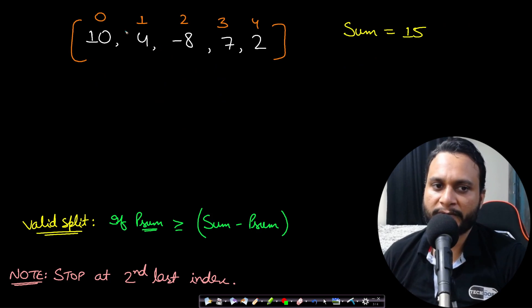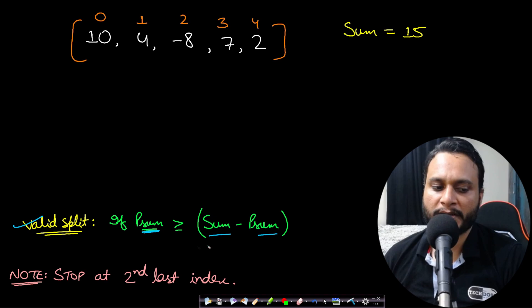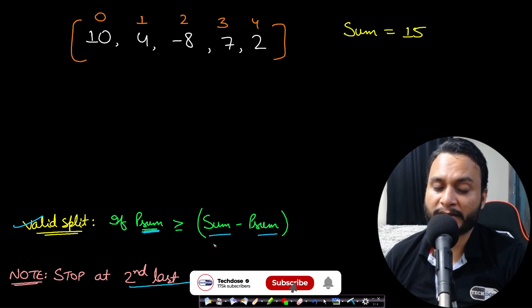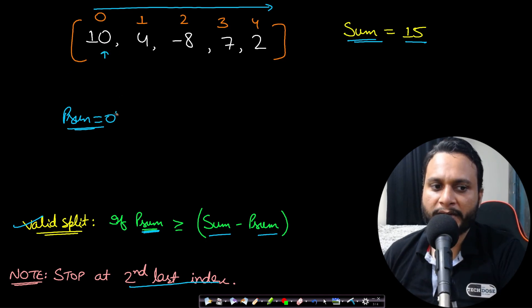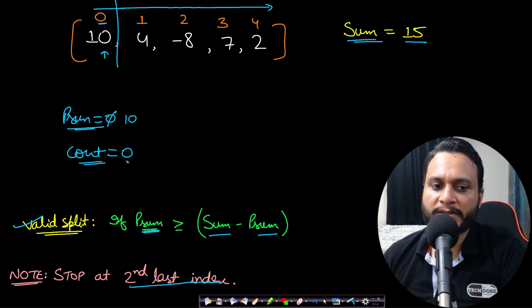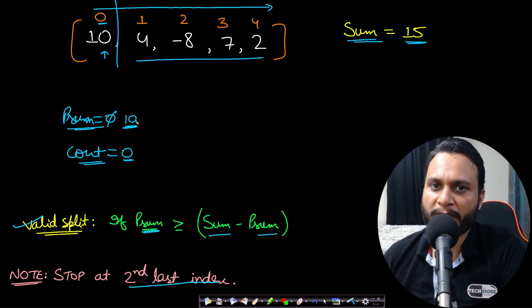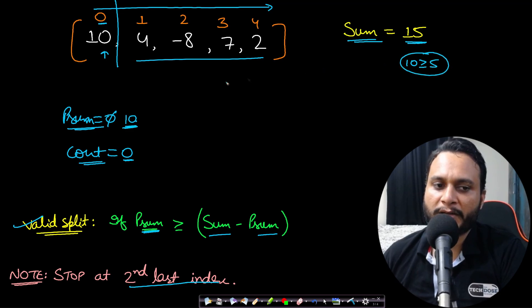Let's do a dry run with five elements. The condition for a valid split is: prefix sum >= total sum minus prefix sum. We stop at the second last index per the constraint. First, compute the total sum by traversing left to right — this equals 15. Initialize prefix sum to 0 and counter to 0. At index 0, add the value to get prefix sum = 10. Right-hand side sum = 15 minus 10 = 5. Since 10 >= 5, this is a valid split, so increment the counter to 1.